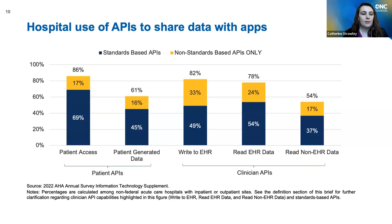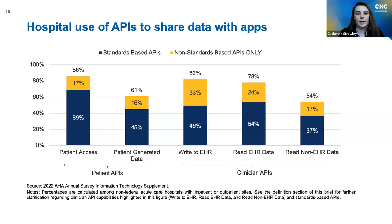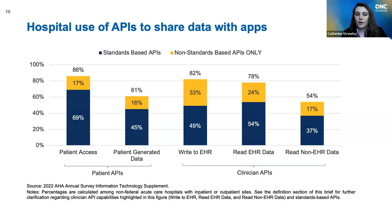The first visualization shows hospital use of APIs to share data with apps across all functionalities. For patient APIs — enablement of patient access and patient-generated data submission — and for clinician APIs — write to EHR, read EHR data, and read non-EHR data. The big takeaway is that about four in five hospitals reported using APIs to enable apps to write data to the EHR, read EHR data, and support patient access functionalities through apps. The proportion using APIs for patient-generated data submission and read non-EHR data is a bit lower, but across the board, hospitals are mostly using standards-based APIs for these purposes.